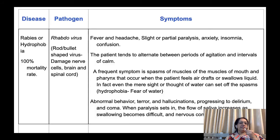The next disease is rabies, or hydrophobia, with a 100% mortality rate, caused by rhabdoviruses. This is a rod- or bullet-shaped virus that damages nerve cells, the brain, and the spinal cord. The disease occurs because of the bite of a rabid dog to human beings. Symptoms are fever, headache, slight or partial paralysis, anxiety, insomnia, and confusion. The patient alternates between periods of agitation and intervals of calm. A frequent symptom is spasm of muscles of the mouth and pharynx when the patient feels air, drops, or swallows liquid — even the mere sight or thought of water can trigger the spasms.